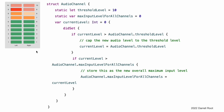When a channel's audio level is 0, none of the lights for that channel are lit. When the audio level is 10, all of the lights for that channel are lit. In this figure, the left channel has a current level of 9, and the right channel has a current level of 7. The audio channels are represented by instances of the AudioChannel structure. The AudioChannel structure defines two stored type properties to support its functionality.